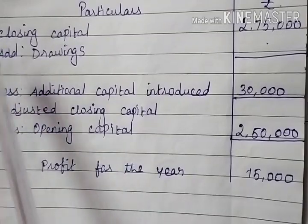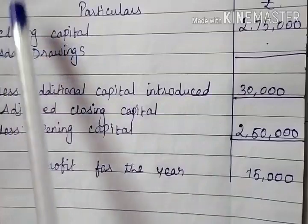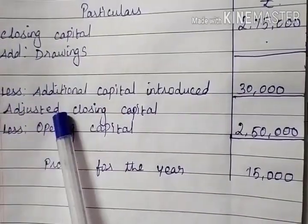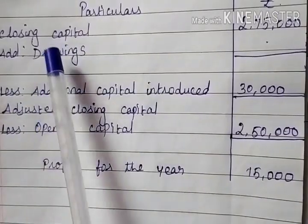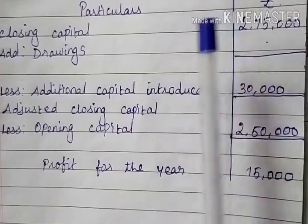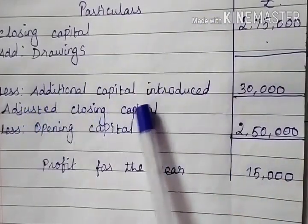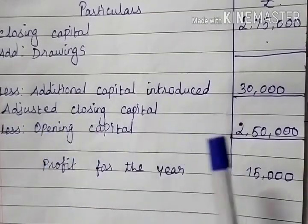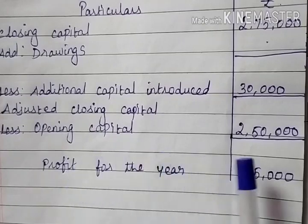Solution: write the format with the given information. Closing capital: 2,75,000. Add drawings: question mark. Less additional capital introduced: 30,000. Adjusted closing capital. Less opening capital. Closing capital amount is 2,75,000. Drawings: question mark. Additional capital introduced: 30,000. Opening capital: 2,50,000. Profit: 15,000.